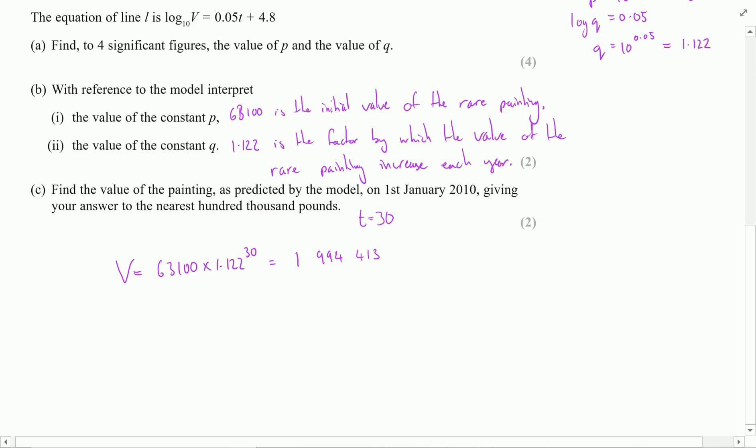It wants it correct to the nearest hundred thousand pounds, so correct to this point. So rounding there is going to give me £2,000,000 exactly. So my final answer is that the value of the painting is predicted to be £2,000,000.